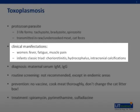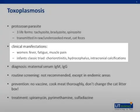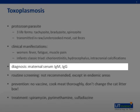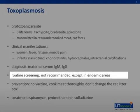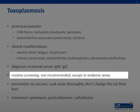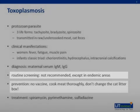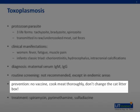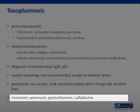Additional sequelae include decreased birth weight, hepatosplenomegaly, jaundice, anemia, and learning disabilities. Maternal infection is diagnosed serologically by measuring IgM and IgG. IgM appears by day 10 after infection and is usually absent by three to four months. In the United States, there is not routine screening of pregnant women, though in endemic areas such as France, routine screening programs are in place. There is no vaccine available, so preventative strategies are lifestyle-based, such as thoroughly cooking meat and not cleaning the litter box while pregnant. Treatment includes spiramycin, pyrimethamine, and sulfadiazine.